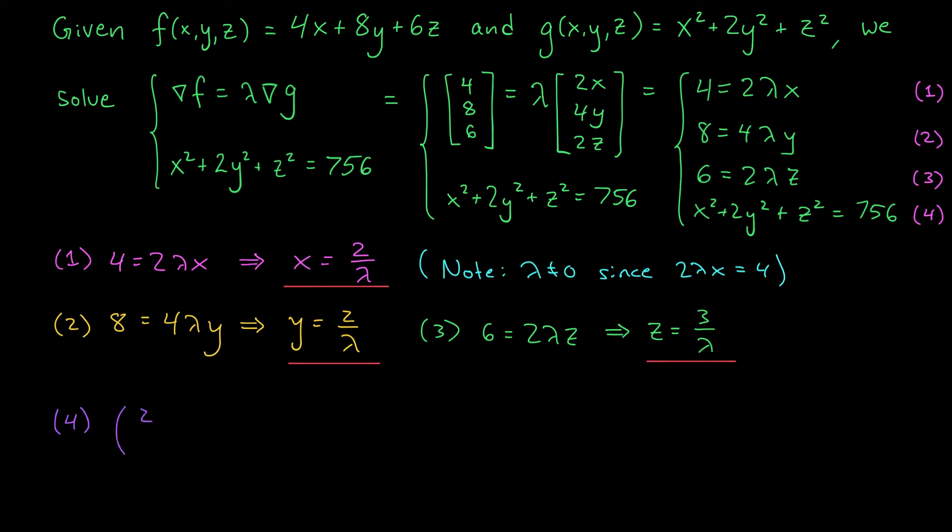From equation 4, we have 2 over lambda squared plus 2 times 2 over lambda squared plus 3 over lambda squared equals 756. Now, you can see in the numerators here, we're going to have 4, 8, and 9. And if you add those up, you get 21. So the left-hand side becomes 21 over lambda squared equals 756. By rearranging this a little bit, we can write lambda squared equals 21 over 756, which is 1 over 36. And now we apply a square root. We find that there are 2 possibilities for lambda. Lambda is 1 over 6 or minus 1 over 6.